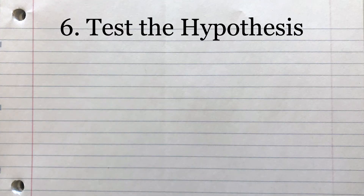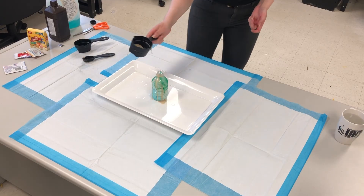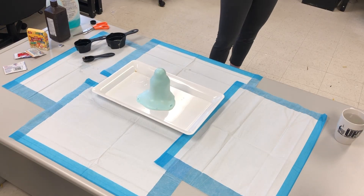Now we will decide whether to accept or reject our hypothesis. Since we didn't complete a control experiment where we see how long the reaction would take without a catalyst, we can't truly accept our hypothesis yet. But for this video, we knew from background information that the reaction was very slow, so we can conclude that we have support for our hypothesis.